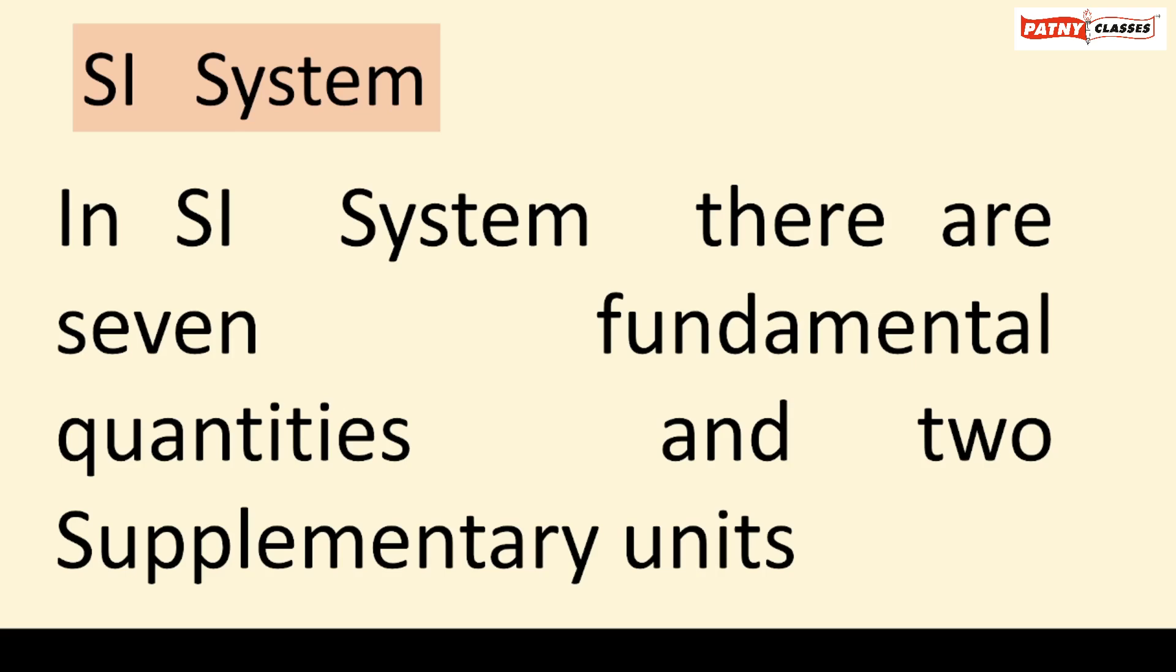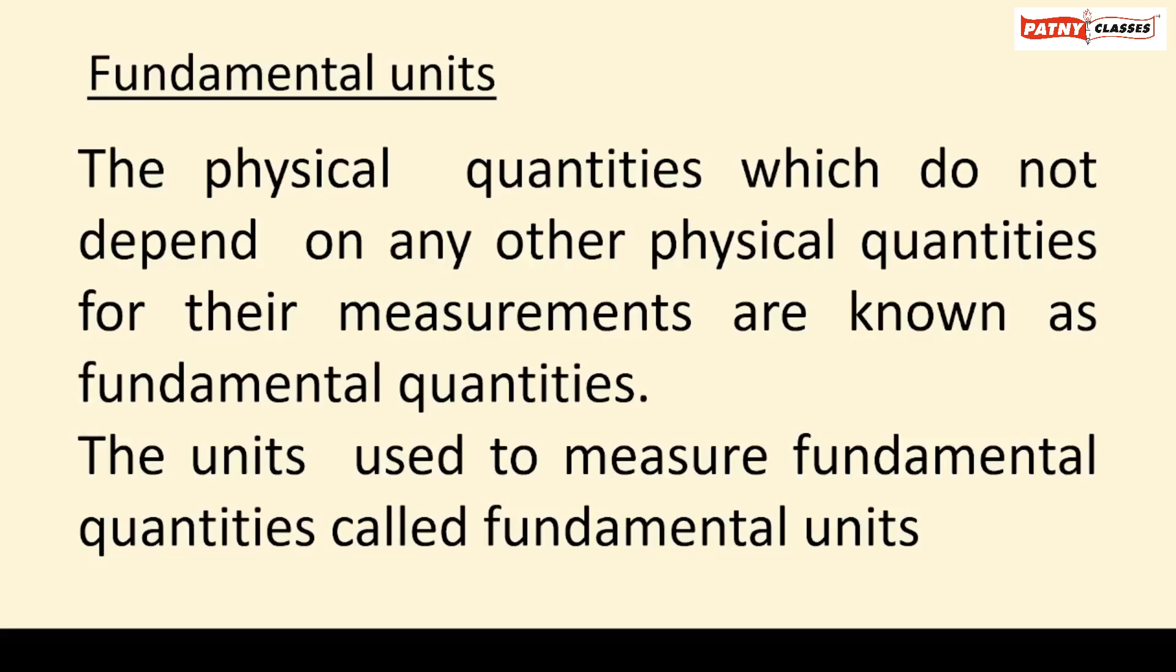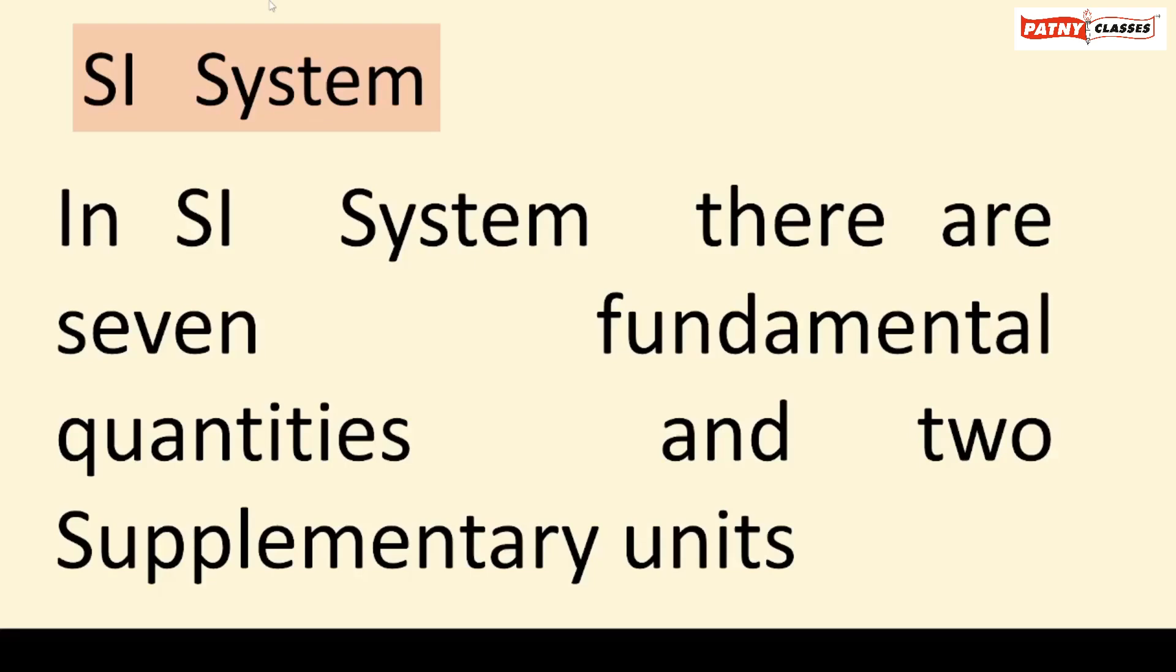In the SI system, there are seven fundamental quantities and two supplementary units. The physical quantities which do not depend on any other physical quantities for their measurements are known as fundamental quantities. The units used to measure fundamental quantities are called fundamental units.